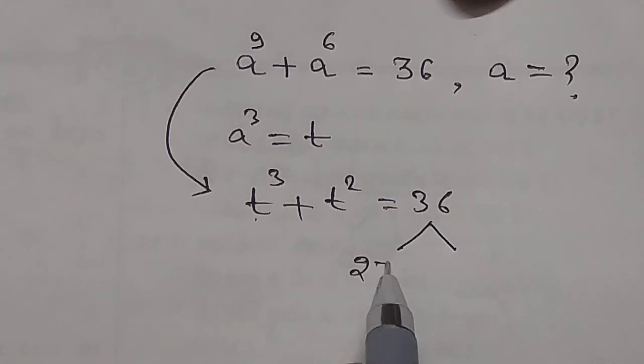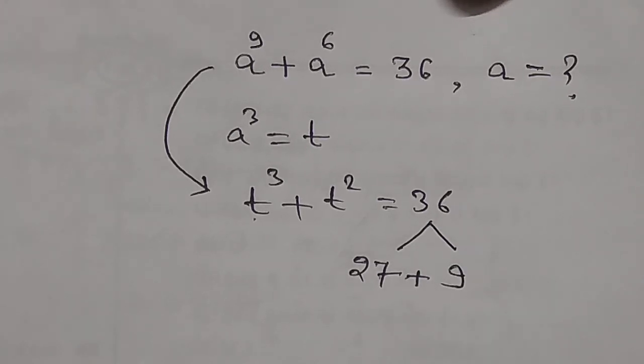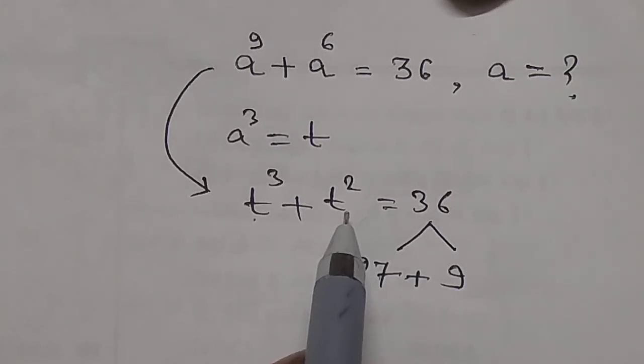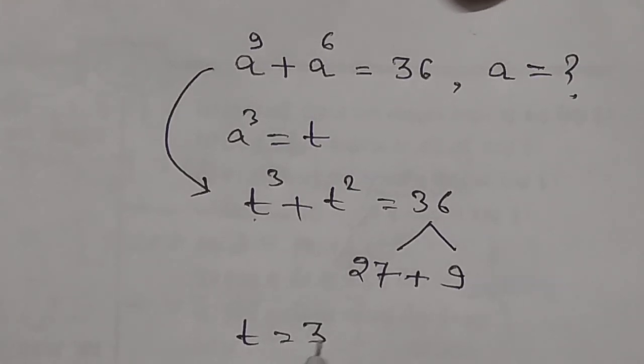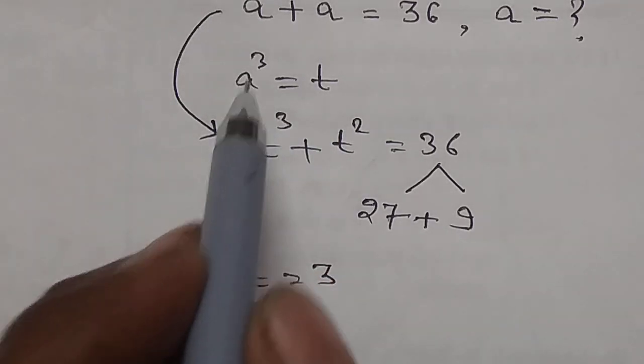can be split into 27 and 9, which sum is 36. And 27 is a perfect cube number and 9 is a perfect square number. So t is equal to 3. T is equal to 3, and here t equals